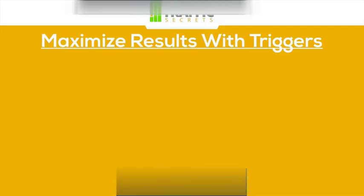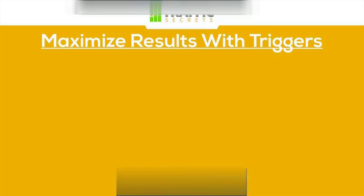Opening emails, clicking links, buying things, watching videos, downloading things — we can find ways to maximize the money that we make based on how these events are happening.